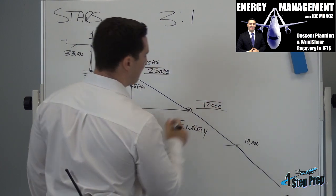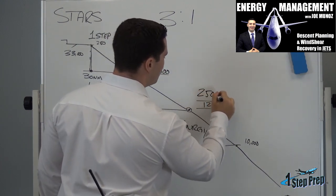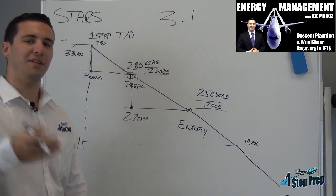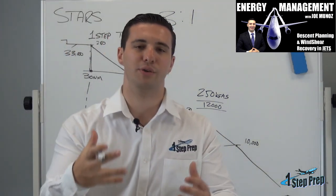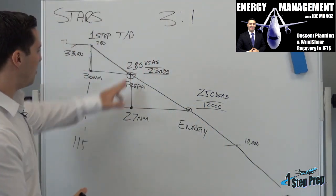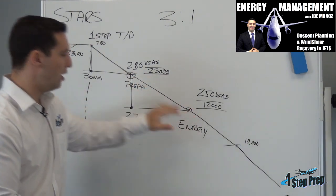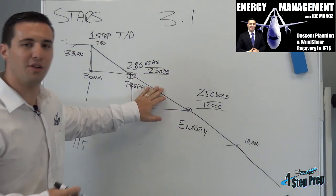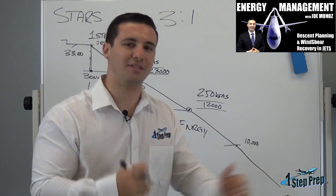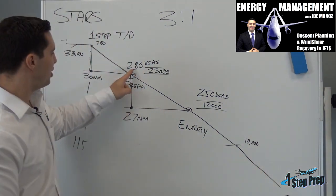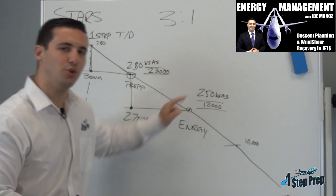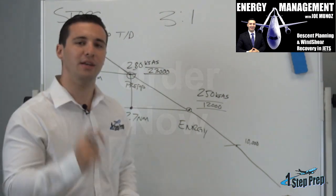Let's say that we have a speed restriction here also of 250 knots. Remember the basic math that we saw a little bit earlier in this course — not only do we now need to figure out how much altitude we need to lose, but we will also need to figure out how much additional space is needed in order to shed 30 knots, from 280 to 250 knots.